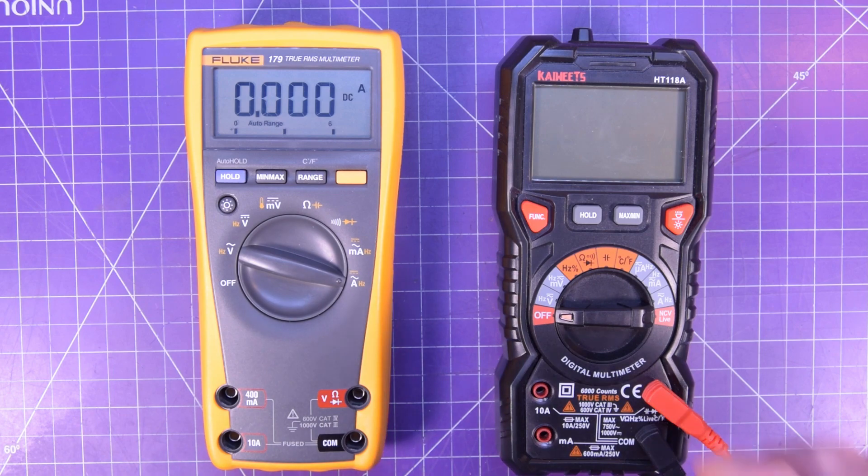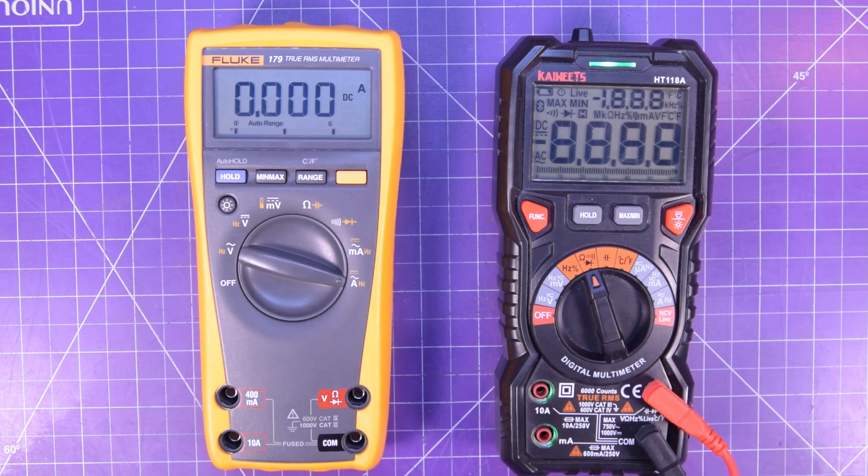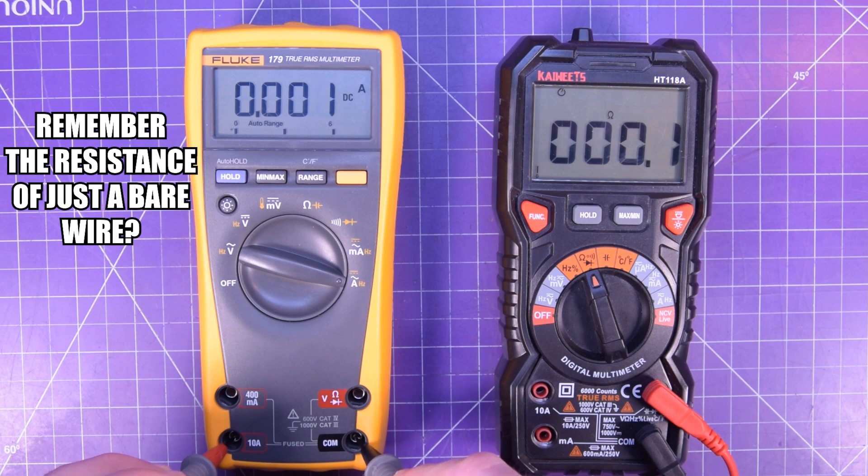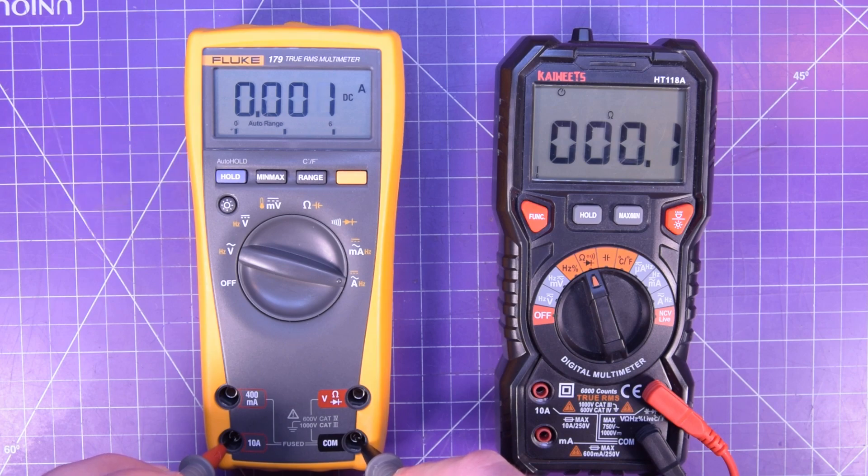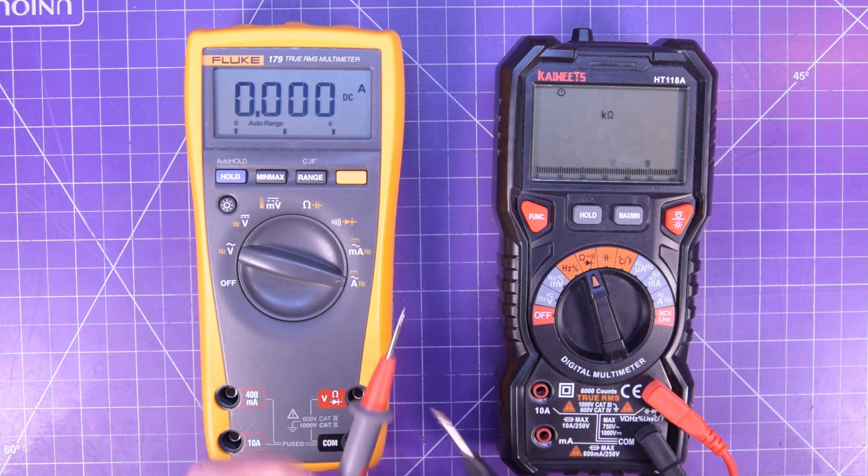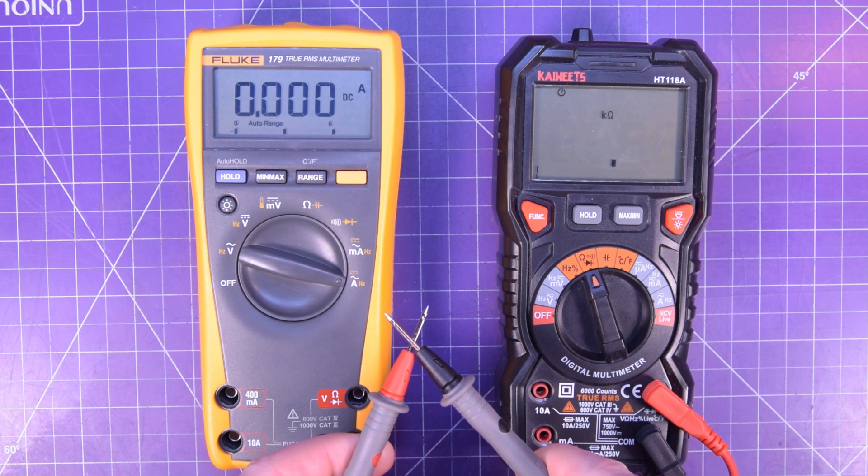Here I have a second multimeter, and I'm just going to check the resistance between the COM and the 10 amp port. 0.1 ohms is what I'm reading, and don't forget that 0.1 ohms is probably the resistance in the leads themselves. Let's check the milliamp range now. 1.8 ohms of resistance. So if you were to try to check voltage in this range, you would absolutely blow the fuse.